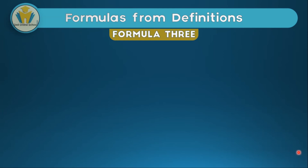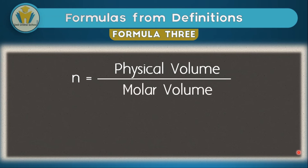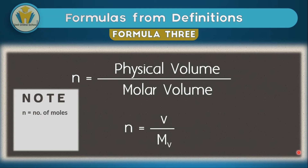Now let's talk about the final formula, which is formula 3. This formula comes from the third definition, where we said a volume of gas equivalent to 24 cubic decimeters at RTP is one mole, and a volume of gas equivalent to 22.4 cubic decimeters at STP is also one mole. Therefore, N equals the physical volume of a particular gas divided by the molar volume. Molar volumes change depending on the conditions. In abbreviation, this formula is N equals V over MV. At RTP, the molar volume is 24 cubic decimeters. At STP, the molar volume is 22.4 cubic decimeters. These three formulas are the basis of the mole concept.